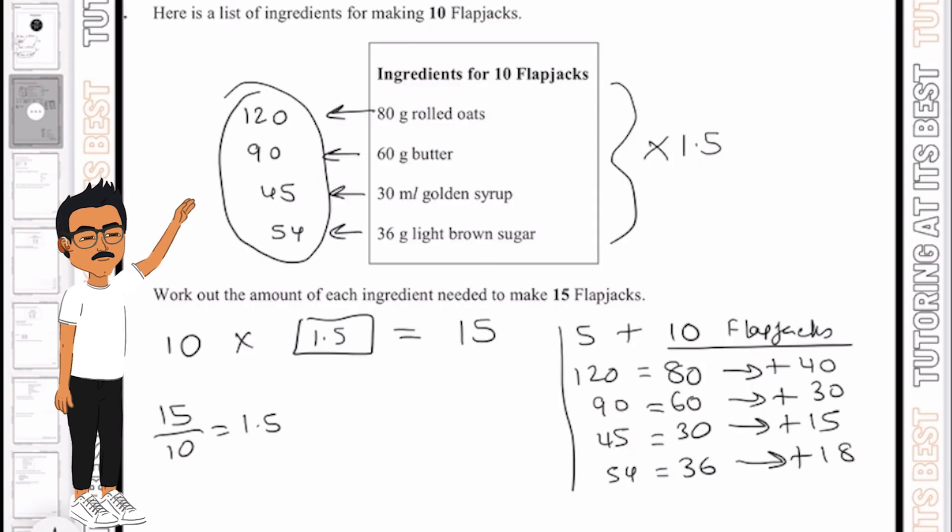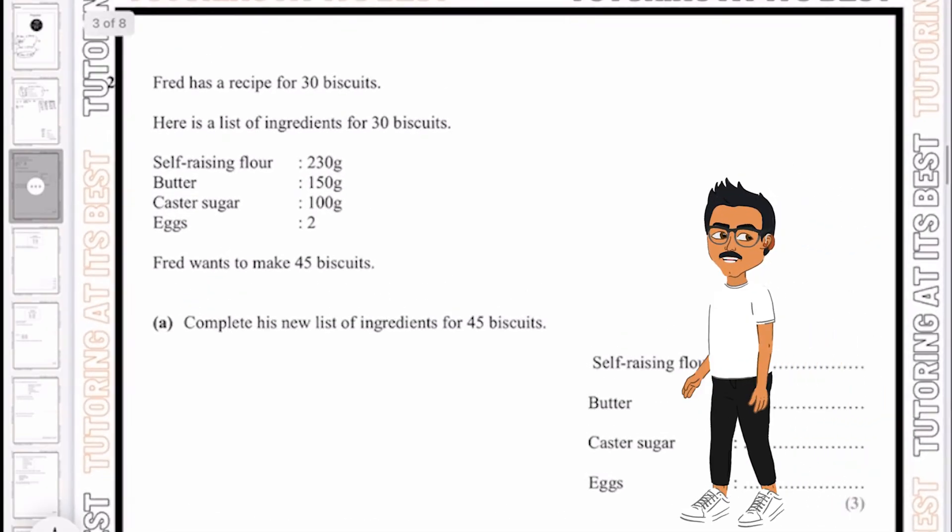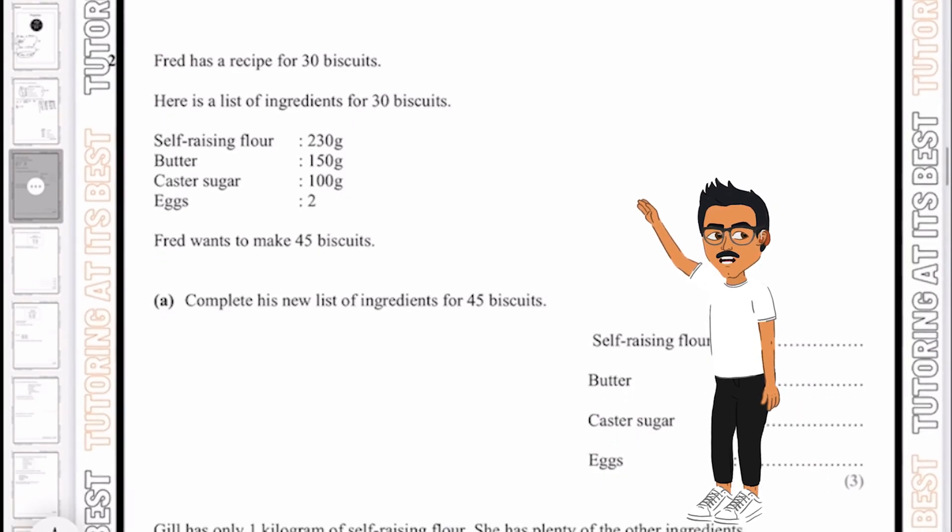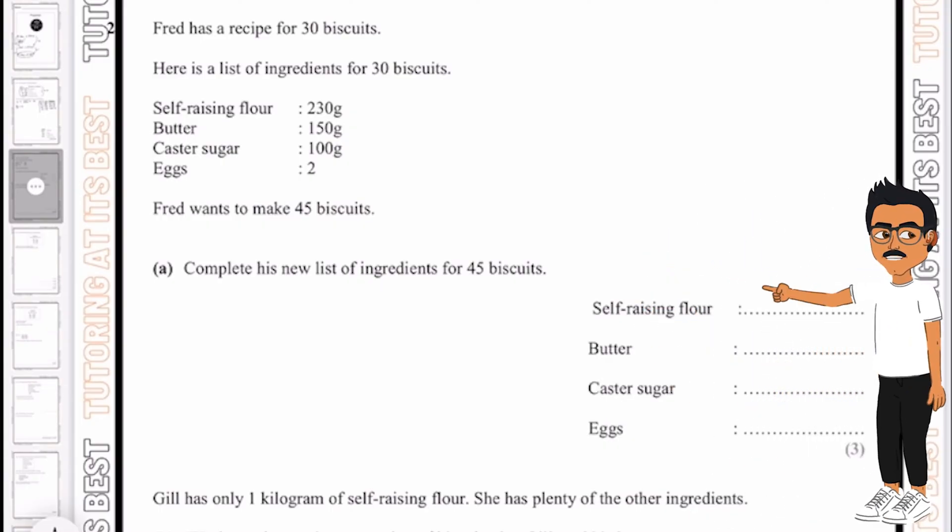And there we are. Marvelous. Okay let's dive into question 2. So Fred has a recipe for 30 biscuits, and here's the ingredients for the 30 biscuits. Now he wants to make 45 biscuits. So complete the new list of these ingredients.